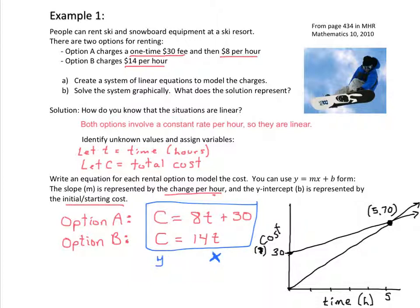What does the solution represent here if the solution is 5, 70? It means that after five hours, because that's our X axis value, that the cost will be $70 for both of the options.